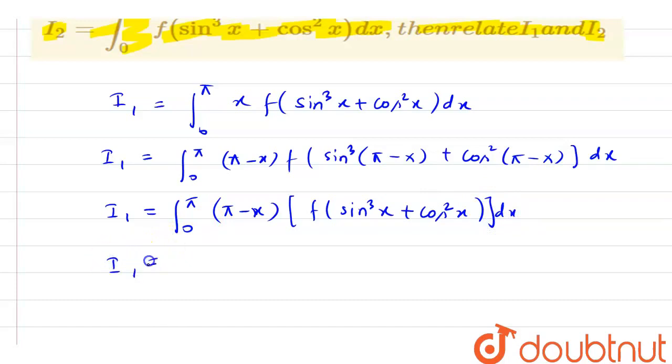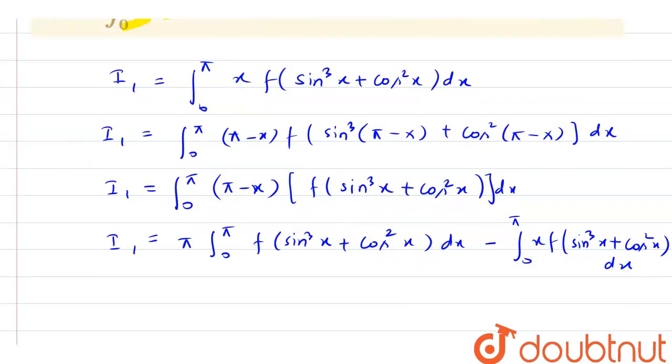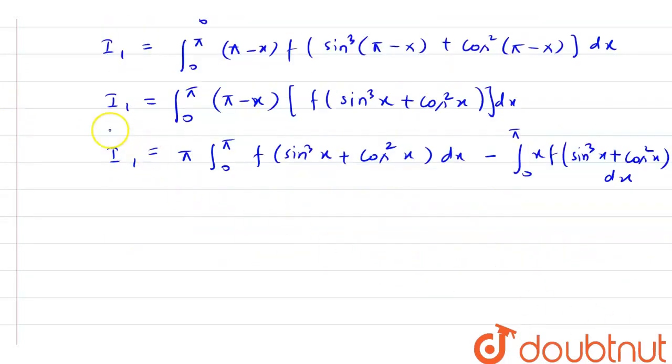Now, I can write it as i1 equals 0 to pi, pi f sin cube x plus cos square x dx minus 0 to pi x f sin cube x plus cos square x dx. This is nothing but the value of i1, so I can write it as 2i1 equals pi times 0 to pi f of sin cube x plus cos square x.